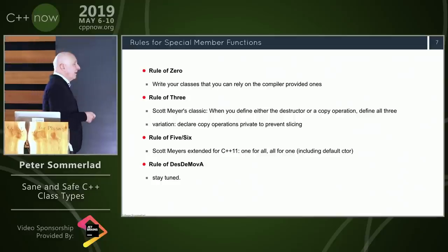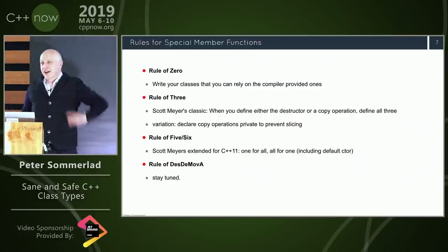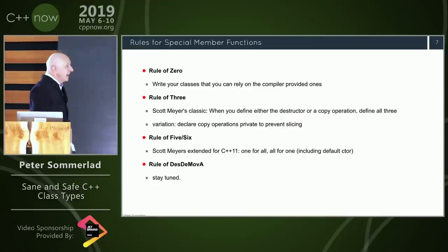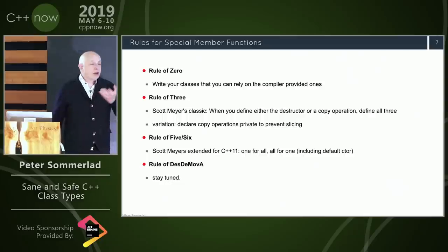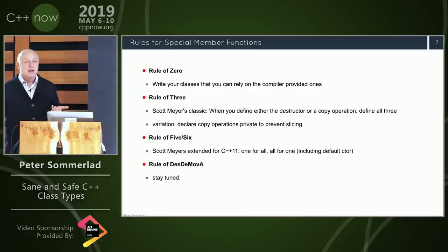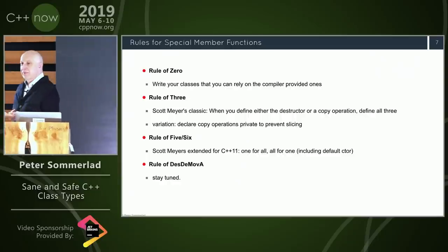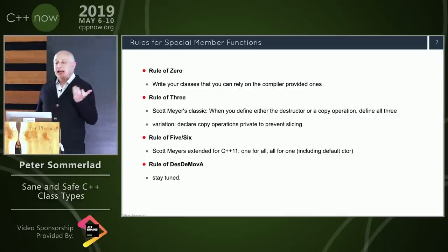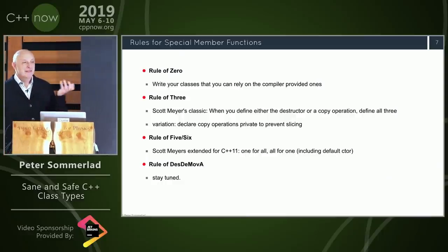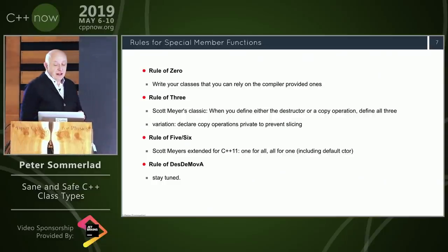Then there is the famous Rule of Three by Scott Meyers. This came from a time pre-C++11 when you might need to define a destructor or a copy operation. Scott Meyers discovered: when you have one of copy constructor, copy assignment, or destructor, you should define all three because they are interdependent. If you have a destructor that cleans up, and you just copy the object, the cleanup might happen twice — and if that cleanup is a delete or free, that's something you don't want.